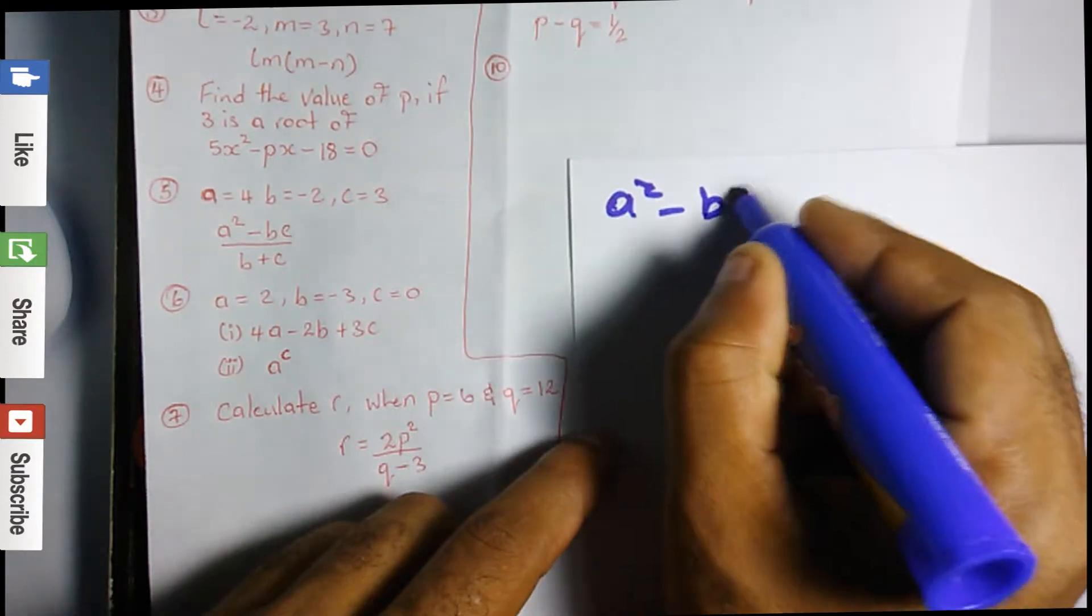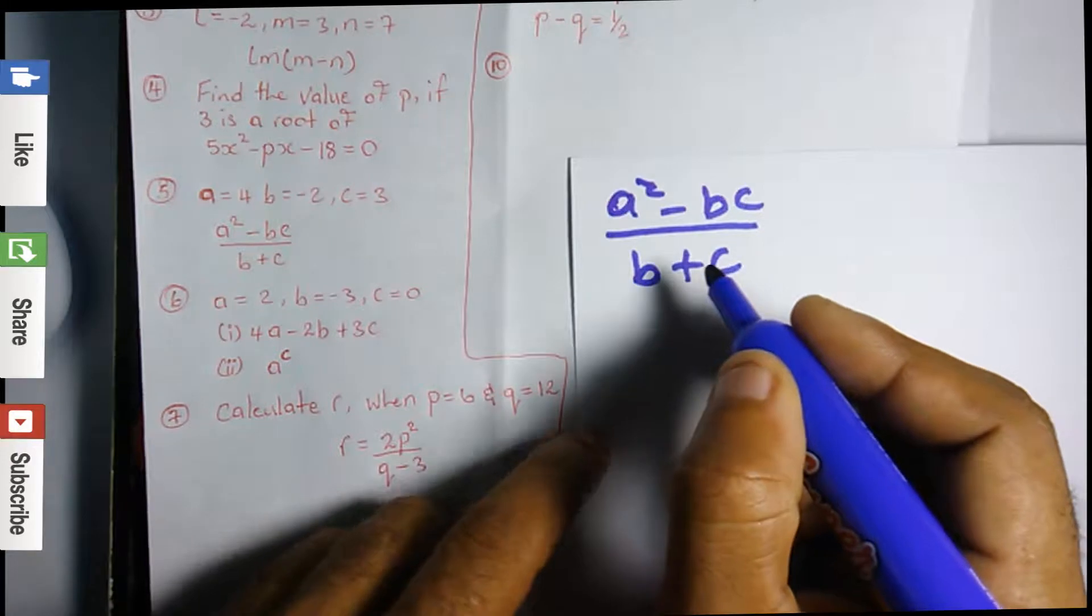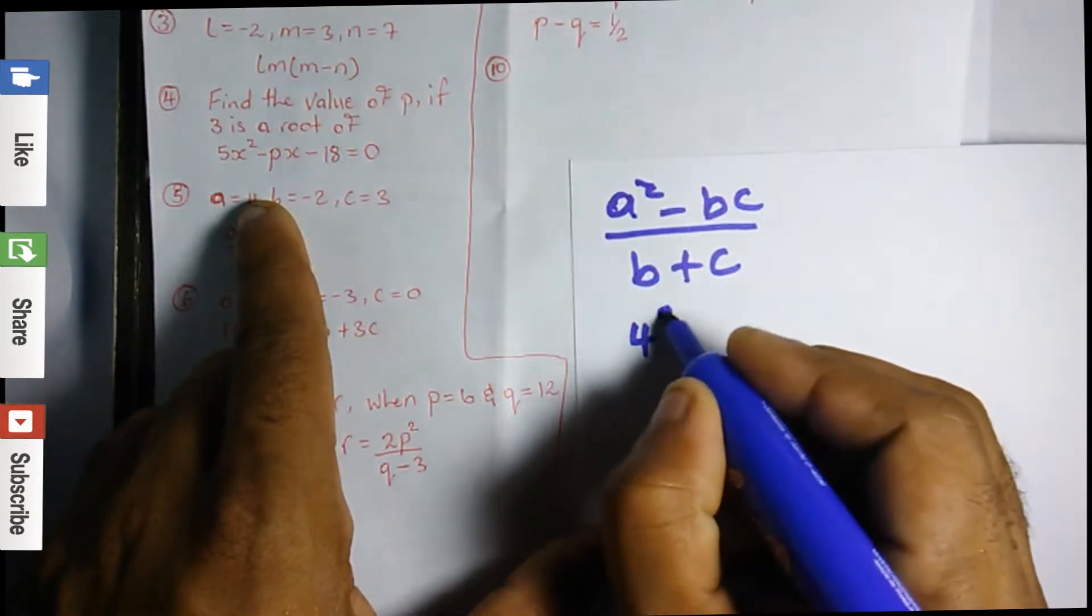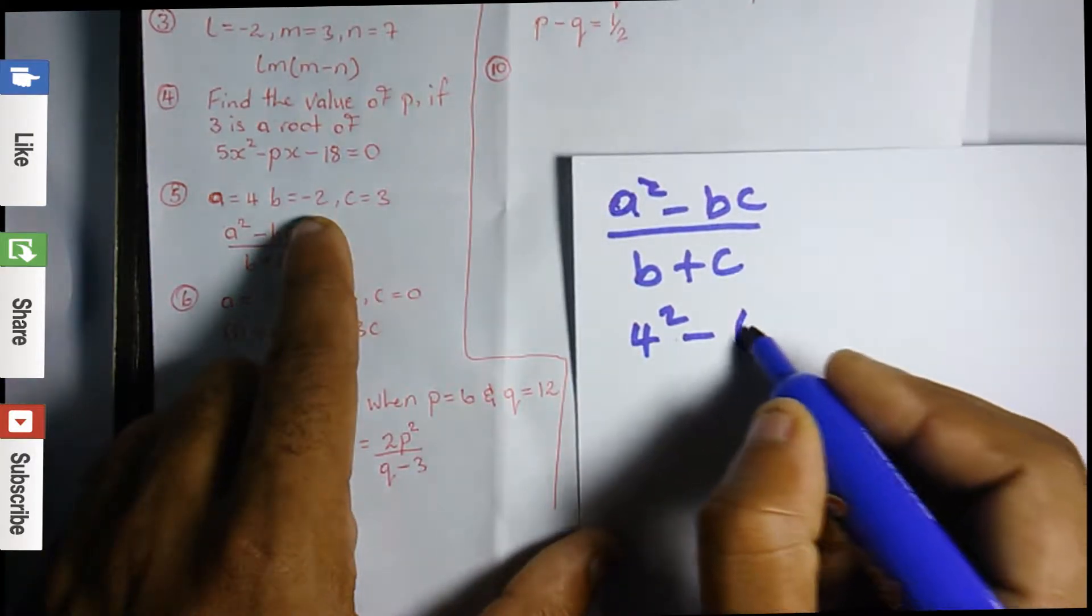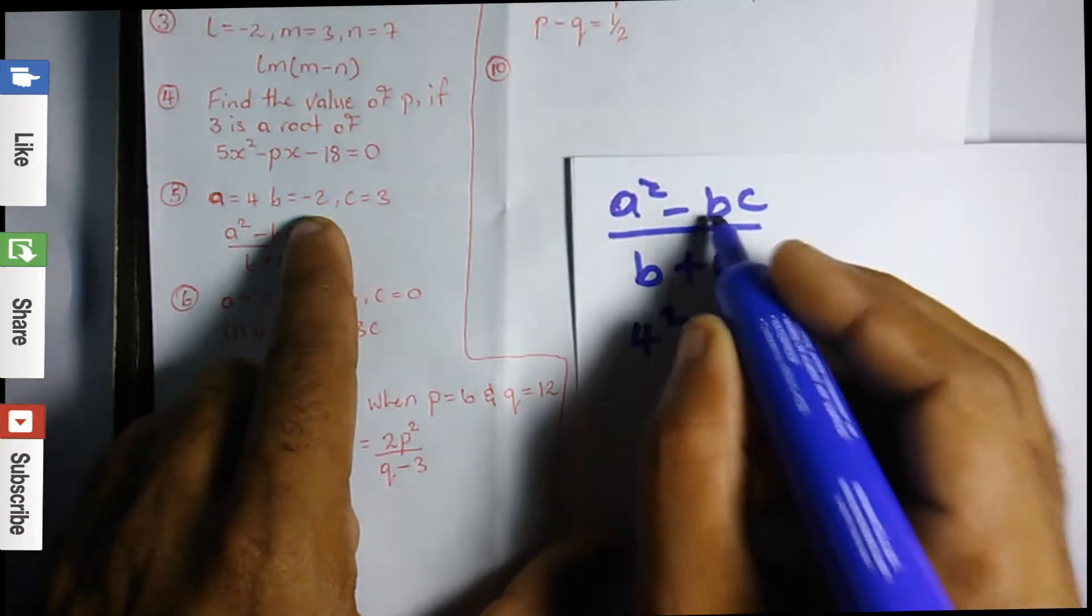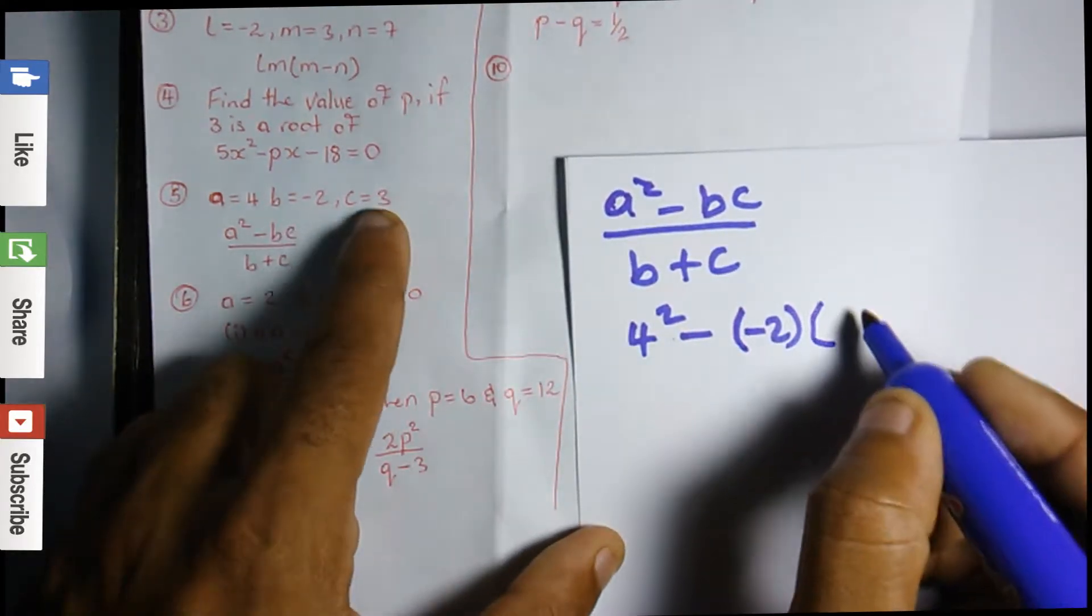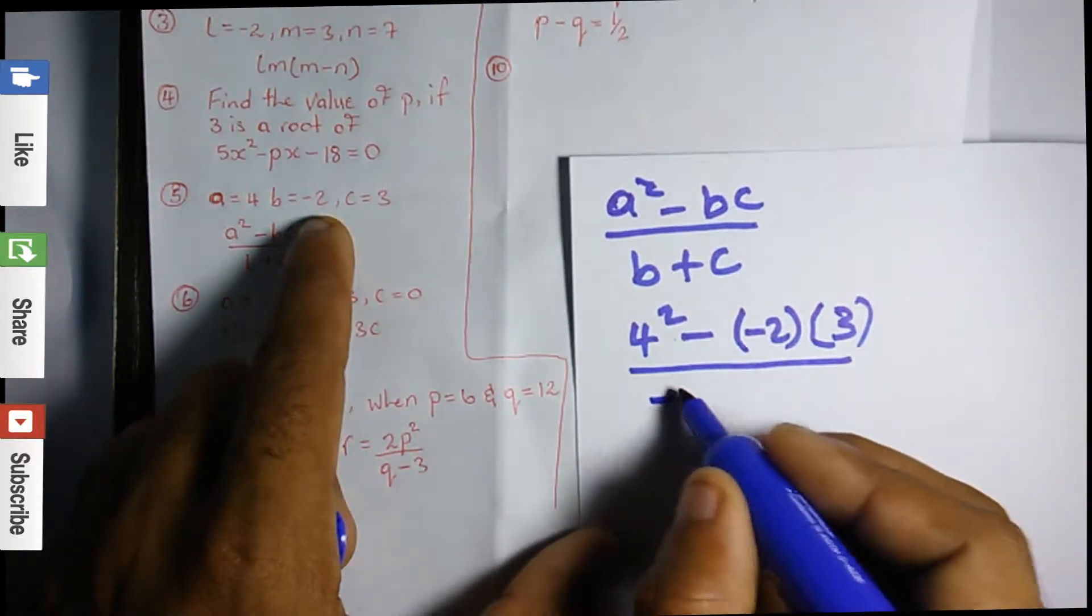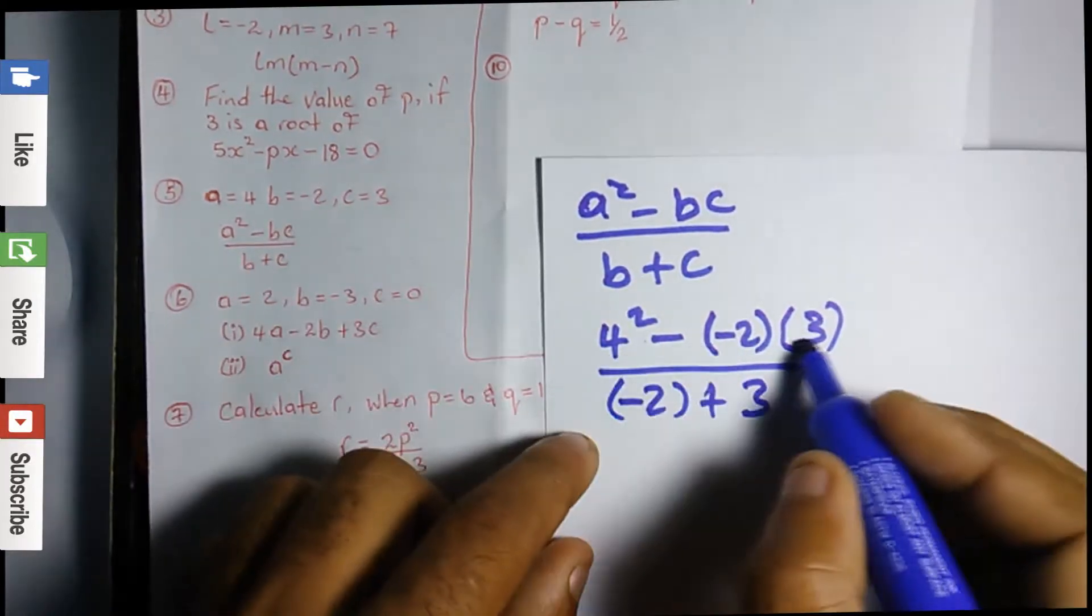So it's a² minus bc all over b plus c. Now a is 4, so 4² minus b. Wherever I see b I'm going to put -2. Remember we have a minus in the expression, so minus b is minus -2 times c, and c is 3, all over b which is -2 plus c which is 3.